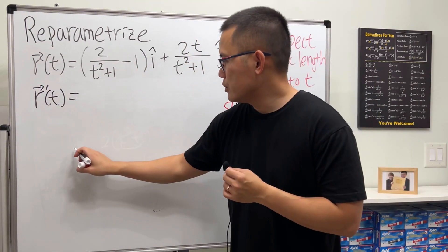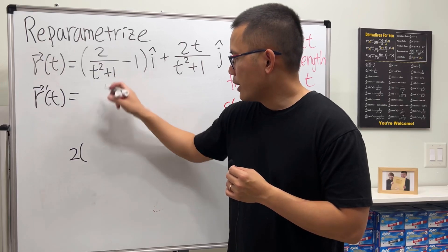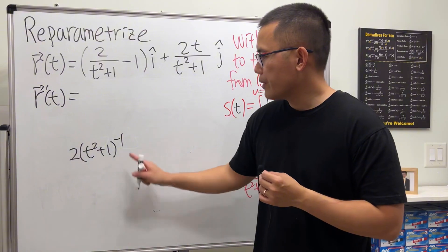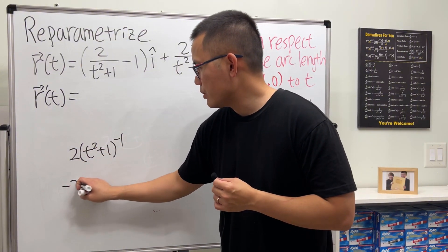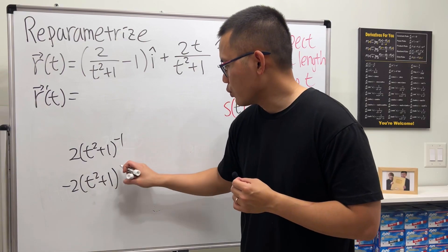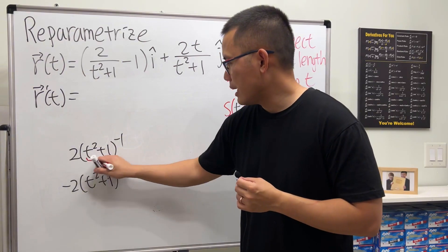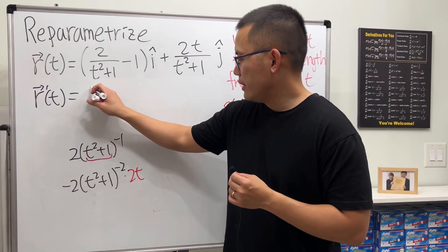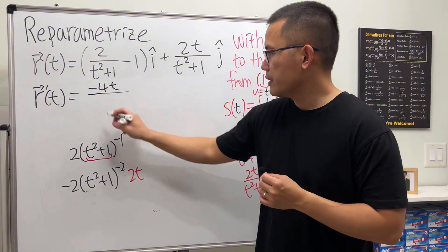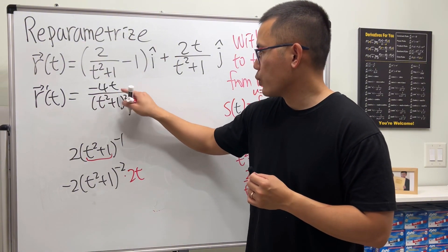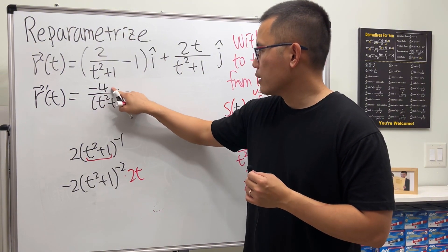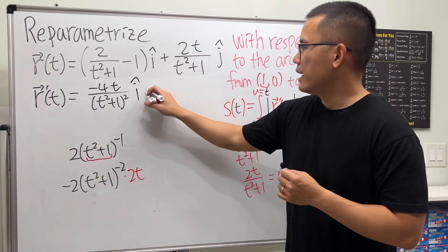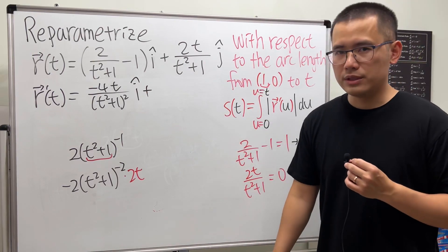To differentiate the x-component, I rewrite 2 over (t² + 1) as 2 times (t² + 1) to the negative 1 power. Bringing the negative to the front gives negative 2, the inside stays, minus 1, then multiplied by the derivative of the inside by the chain rule, giving negative 4t over (t² + 1) squared. The derivative of the constant minus 1 is 0. For the y-component we'll use the quotient rule.